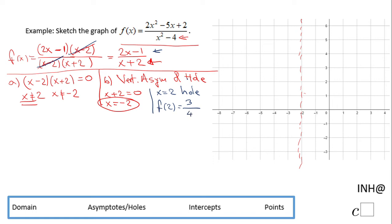So f of 2 for this reduced form is 3 fourths. I'm gonna go somewhere here, 3 fourths, and mark that as a hole at 2 and 3 fourths.